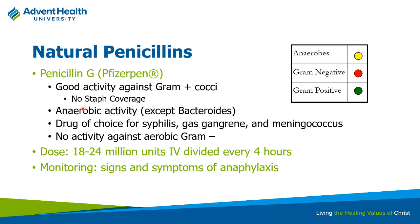It has a little bit of anaerobic activity, but not good for gut stuff like bacteroides. However, things it's still good for: syphilis has never really developed any resistance toward penicillin. Gas gangrene, meningococcus — it still has some decent activity there. However, there's no gram-negative activity for this. So if you had a UTI, would penicillin ever be a good option? Probably not, because UTIs are caused by gram-negative bugs.